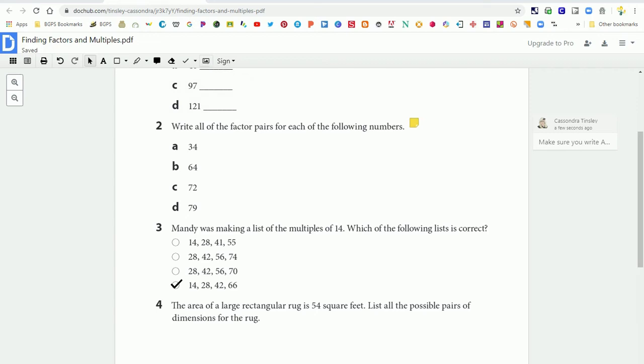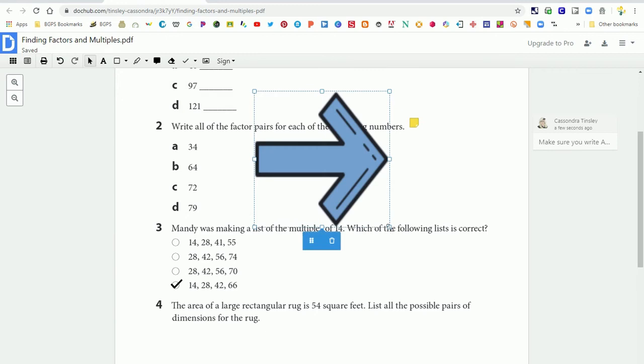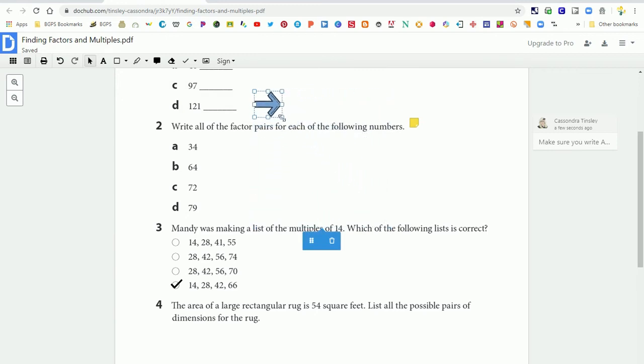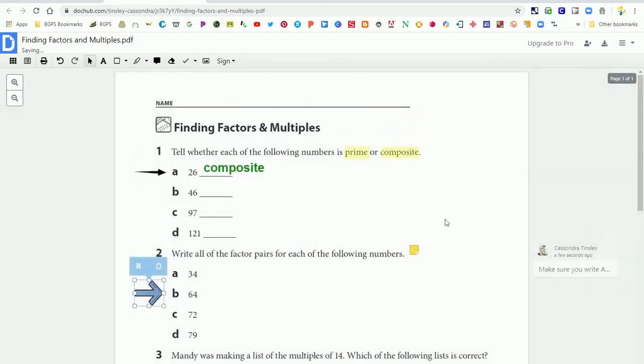The next option is an image. You can insert an image from your pictures that are saved on your computer and put those anywhere in your PDF. The last feature is you can import a signature that you have saved if you are using your PDFs to sign any documents digitally.